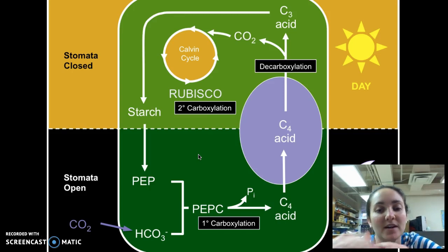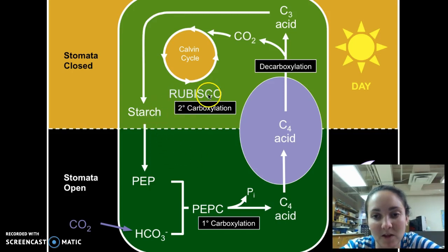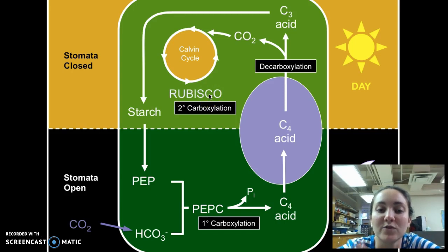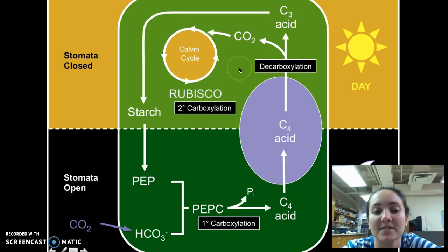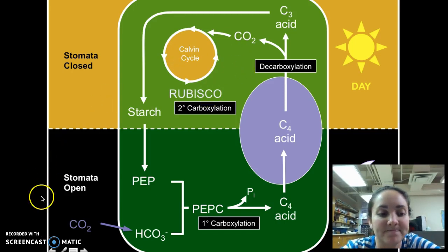Again, CAM photosynthesis happens in hot, dry environments and it is a way for photosynthesis to be temporarily separated so that plants can still perform photosynthesis in really dry environments without losing all of their water.